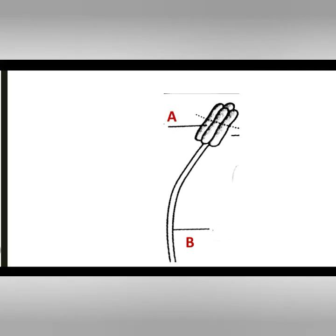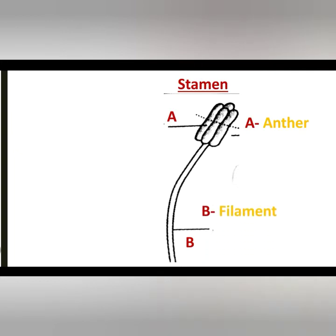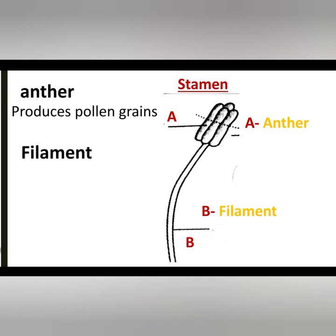We are starting with the male part of the flower, which is the stamen. A quick overview of the parts on the screen: A is the anther and B is the filament. The function of the anther is to produce pollen grains. The filament is there to support the anther. Combining all this, the stamen is there to produce the male sex cell known as pollen grain. A group of stamens on the flower is called the androecium.